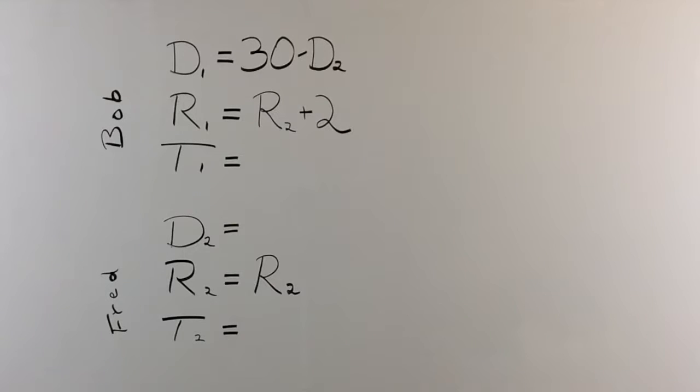For D2, we're going to put D2. And did they give us time? Yeah, they did. They gave us a time of three hours. So let's just put that down for both of them. And now we have enough information to build our first formula.